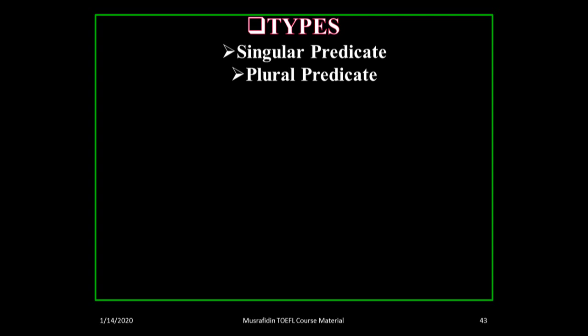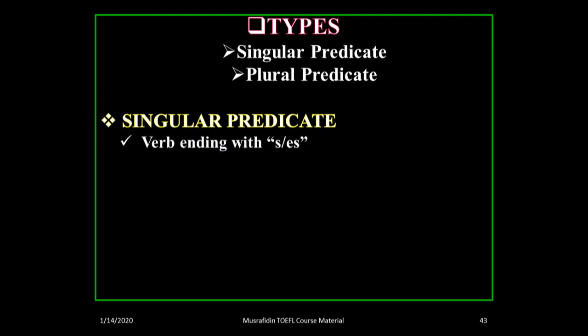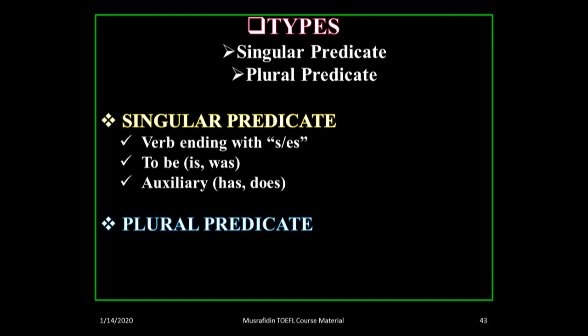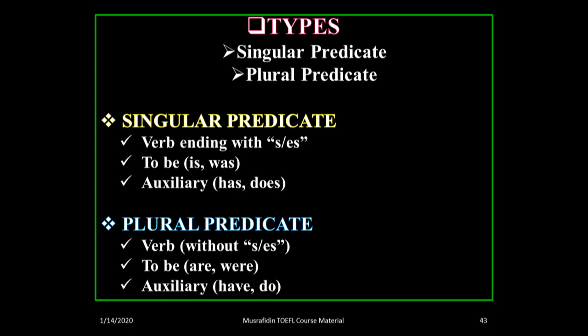Just like subject types, the predicate is also divided into two types: singular and plural predicate. Singular predicate is signaled by a verb ending with -s or -es, to be 'is' and 'was', and auxiliary 'has' and 'does.' Plural predicate is signaled by a verb without -s or -es, to be 'are' and 'were', and auxiliary 'have' and 'do.'